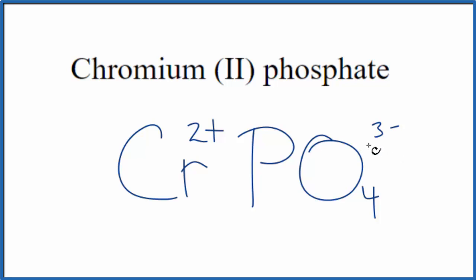The way we'll do this is use something called the crisscross method. We can take the 2, move it out here, and the 3 over here. Let's get rid of these symbols here. And then, because we have 2 of these phosphate ions, each one is 3-, we need to put parentheses around our phosphate here.